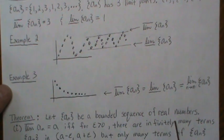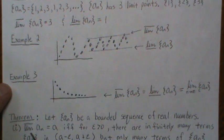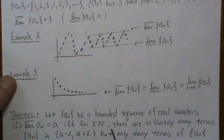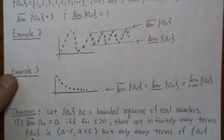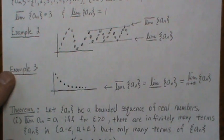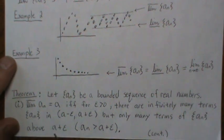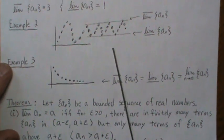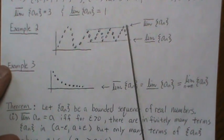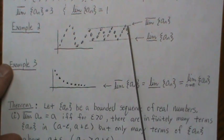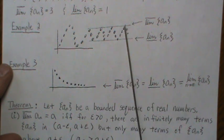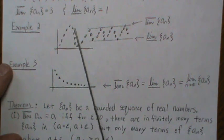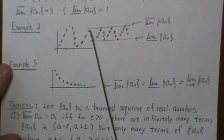Let AN be a bounded sequence of real numbers and let the limit supremum be a. This is true if and only if for every epsilon greater than zero, there are infinitely many terms of our sequence in the interval (a minus epsilon, a plus epsilon), but only finitely many terms above this interval. Looking at our example, if the limit supremum is here, then no matter how small our interval is, there are going to be infinitely many terms in the interval — because it equals that limit point — but any interval we pick above it will contain only finitely many terms.